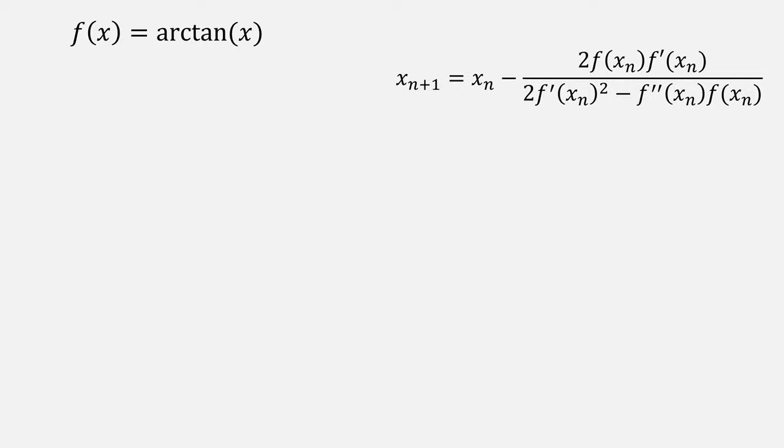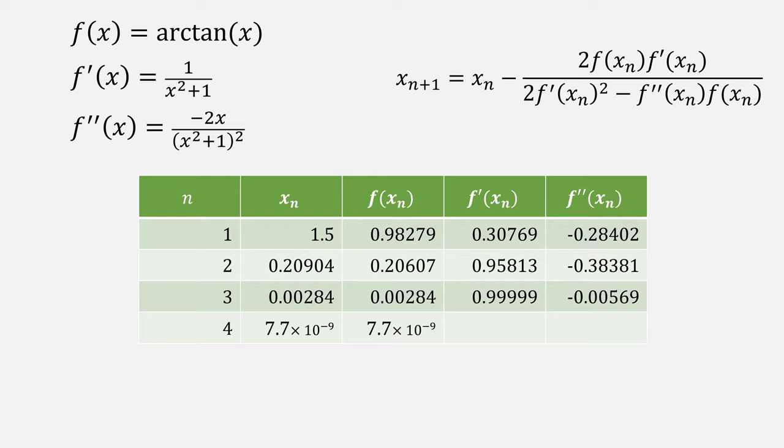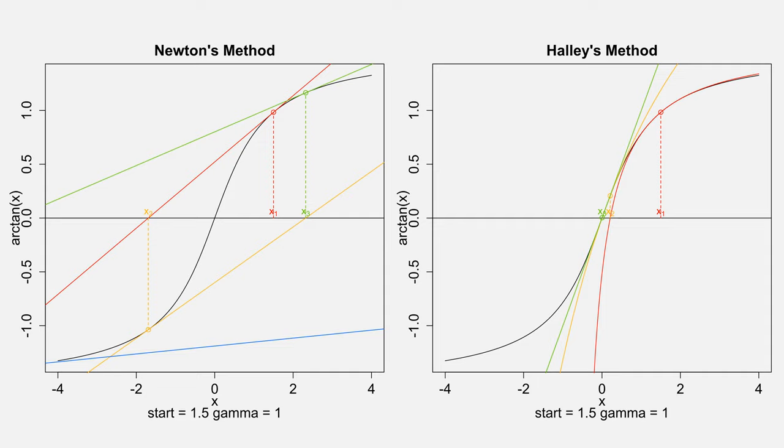We'll do one last example, which is the arc tangent using Halley's method. Find our first and second derivatives, plug in our starting value. It takes about three iterations to converge. Let's compare how Halley's method does in this case against Newton's method. In this example, Newton's method diverges while Halley's converges. In effect, Halley's method is usually much more convergent overall, and converges with a faster order.